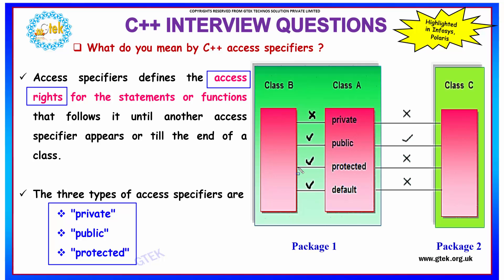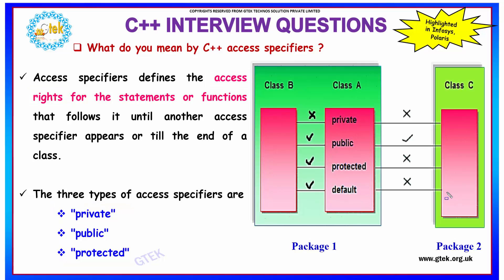If a value is declared as protected in class B, it can be shared by class A since it is in the same package, whereas it cannot be accessed by class C because it is under a different package. Similarly, your default access specifier is protected, so values can be accessed within the same package but not outside it. These questions are frequently asked in Infosys and Polaris technical rounds.